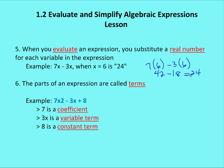Parts of expressions are called terms. So if I have an expression or an equation, and this example, an expression that says 7x squared minus 3x plus 8. 7 is a coefficient, 3x is a variable term, and 8 is the constant term.